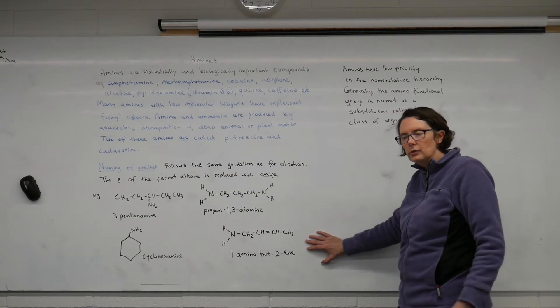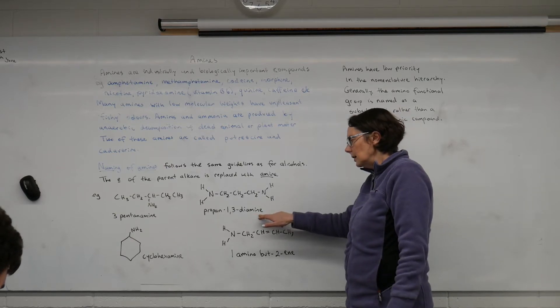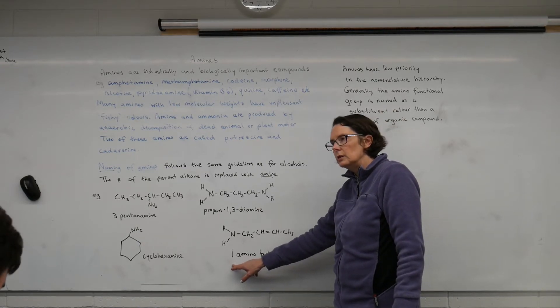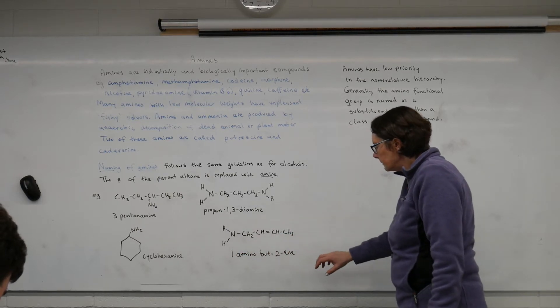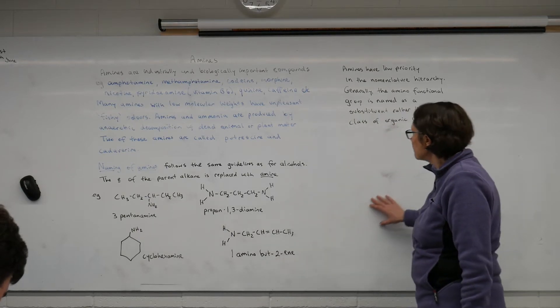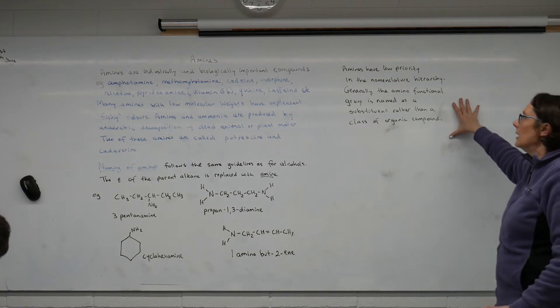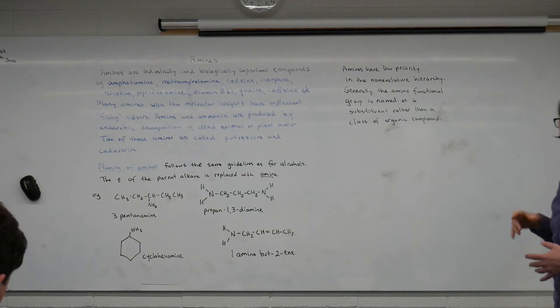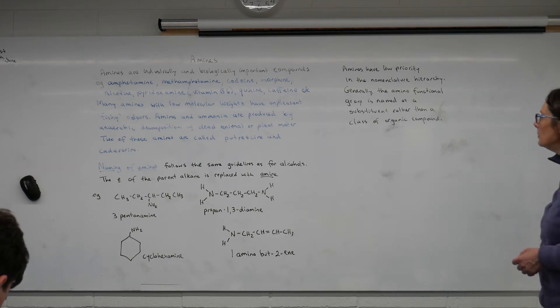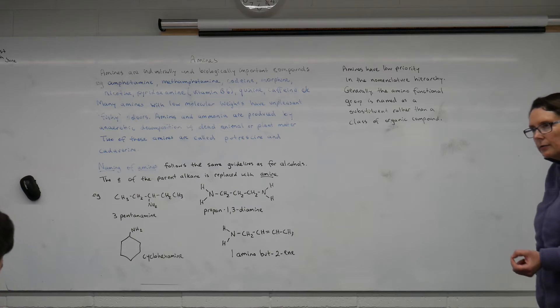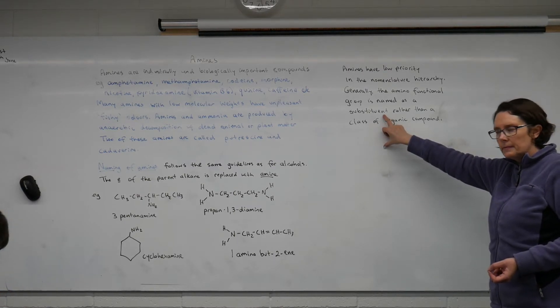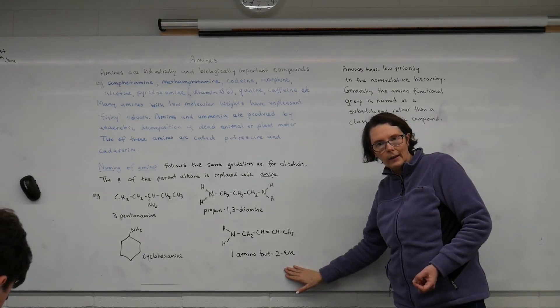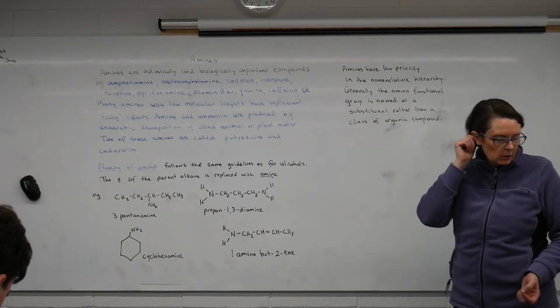But you can see that the moment we have something else present, it's no longer important enough to have the amine at the end, and so the amine group gets moved to the front of the name. And here we have an alkene, and this one is 1-amino-but-2-ene. The amines have low priority in the nomenclature hierarchy, so the hierarchy there telling us the importance, and nomenclature is telling us about naming, so it's naming importance. And so because they have a low priority, then they're generally named as a substituent, which means they get put on the front, rather than as the class of compound, which is what gets put at the end.